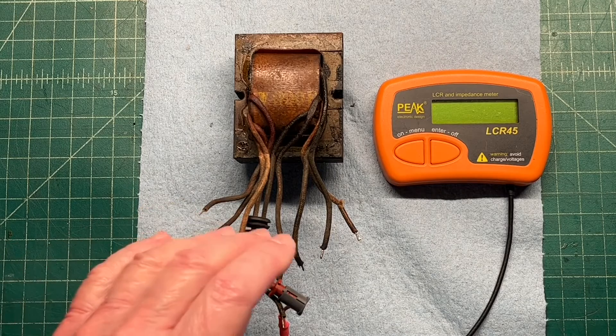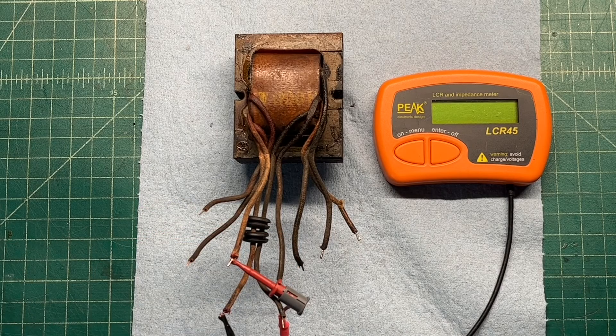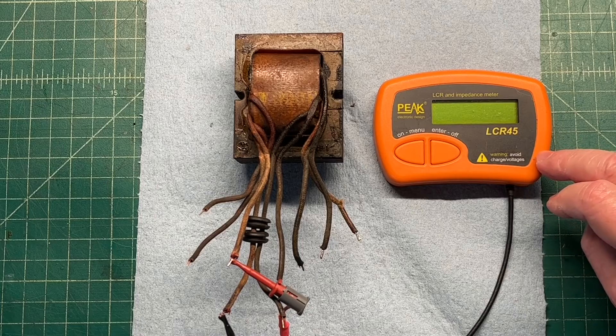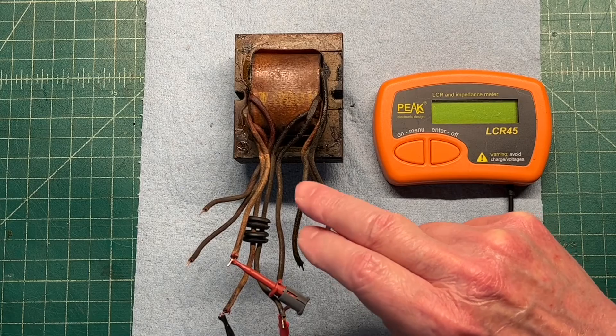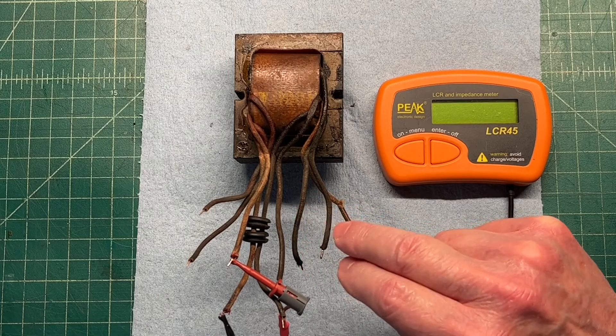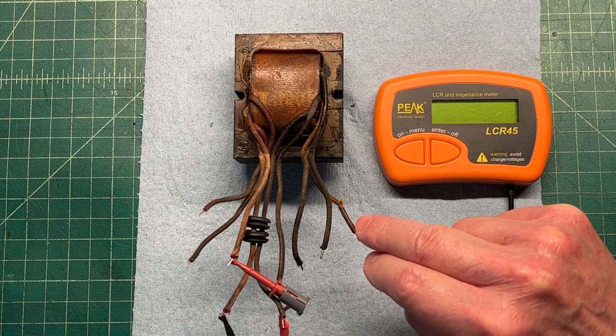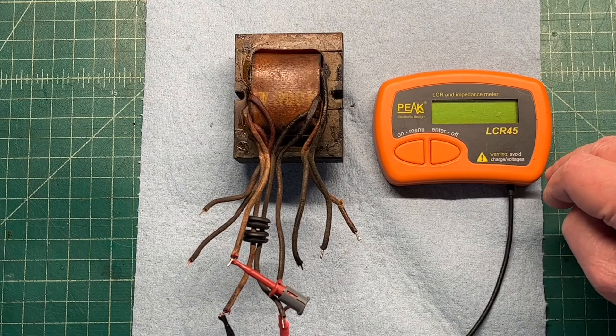Anyway, the purpose of this video again is to demonstrate a technique using the LCR45 to calculate the turns ratio for the power transformer. Again, looking at the leakage inductance method for doing so.